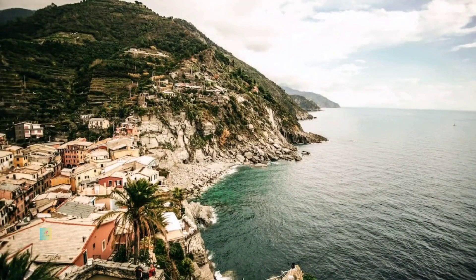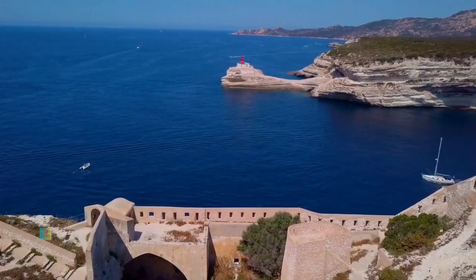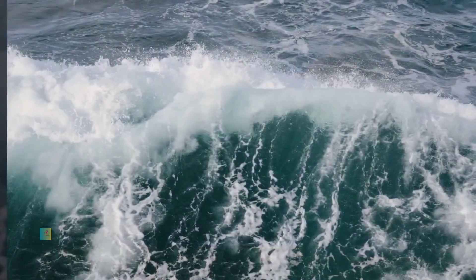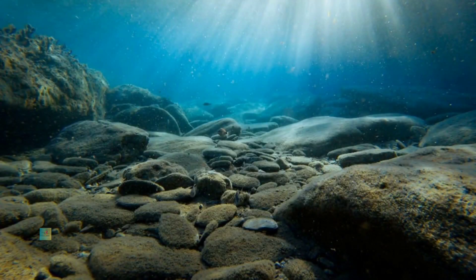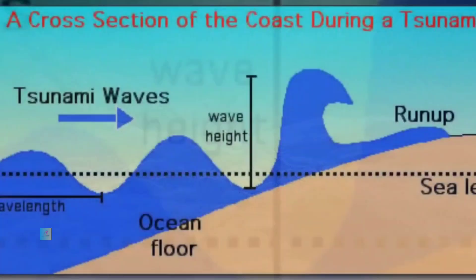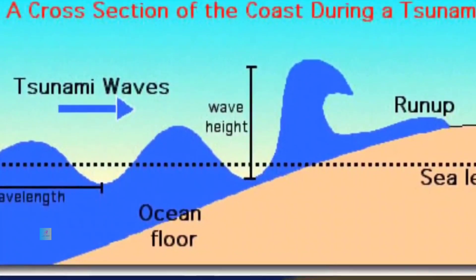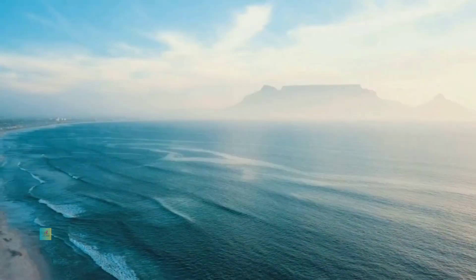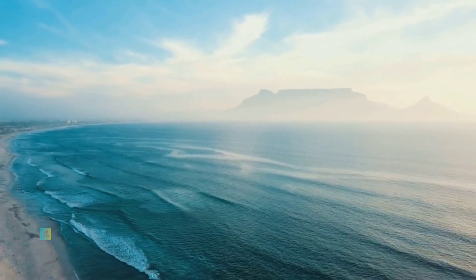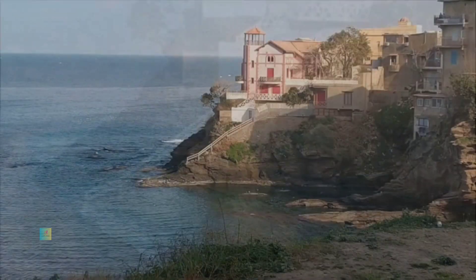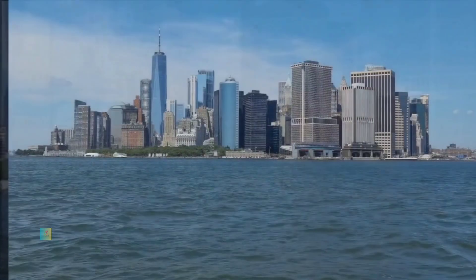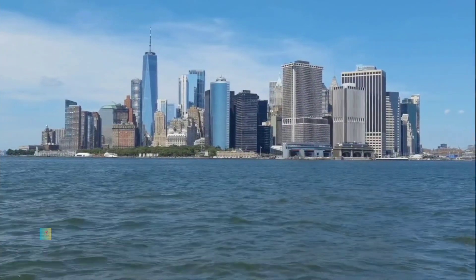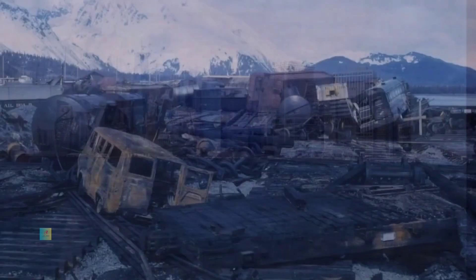Coastal Amplification: As tsunamis approach shallower coastal waters, their dynamics change significantly. The decrease in water depth causes the tsunami waves to slow down, but their long wavelengths result in an increase in wave height. This phenomenon, known as coastal amplification, is responsible for the devastating impact of tsunamis on coastlines. The waves can rapidly transform from seemingly innocuous ripples in the open ocean to towering walls of water, inundating coastal areas.